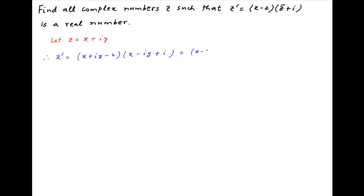This can be arranged as x minus 2 plus iy multiplied by x plus i times in brackets 1 minus y.